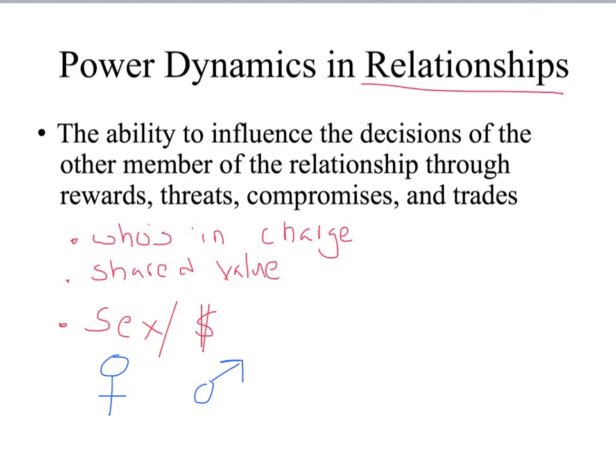There are several things that can make the power dynamic shift. On a large societal scale, one of those things is war. During World War I and II, all the men were off fighting, so women had to take on more important roles in the workplace, and as a result the women gained power in that relationship. In terms of a personal relationship, one thing that can drastically shift a power dynamic is a pregnancy — all of a sudden the woman is pregnant with the man's child and is able to use that as leverage. This is something we'll track again in The Sun Also Rises, looking at how characters interact based on their gender and their roles in specific relationships.